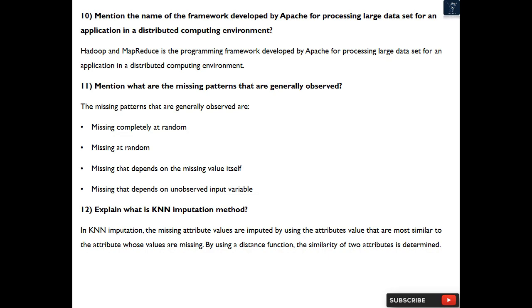Question 11: Mention what are the missing patterns that are generally observed? The missing patterns that are generally observed are: missing completely at random, missing at random, missing that depends on the missing value itself, missing that depends on unobserved input variable.